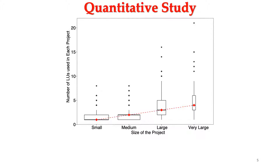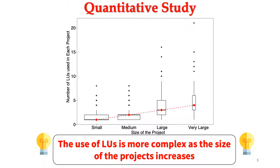This figure shows a summary of our results. We classify the projects based on their size: small, medium, large, and very large projects. The y-axis shows the number of LUs used in each project size category. Each subplot is a boxplot containing the 25th percentile, median, 75th percentile, and so on. We can see clearly that most smaller projects only use one LU. For medium projects, more than 50 percent have more than one LU. The number is even bigger in large and very large projects. So it is clear that the use of LUs is more complex as the size of projects increases. This scenario is very counterintuitive and motivates us to dig deeper and find out the rationale.